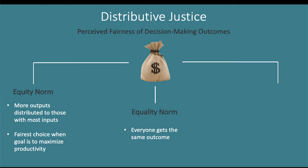The second norm is called the equality norm, which says everybody gets the same outcome regardless of their outputs or inputs. In general, this is perceived to be the fairest choice particularly for team-based work. Because teams are comprised of multiple individuals all contributing to the final product, it can be really hard to tease apart who contributed what. So it tends to be perceived as most fair in a group setting that everybody gets the same reward or the same punishment, because they're working together and it's hard to distinguish individual contributions.